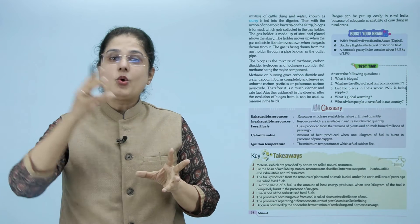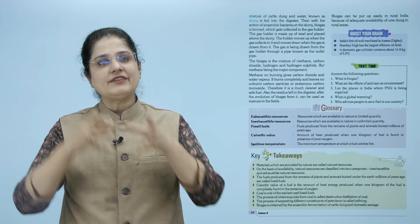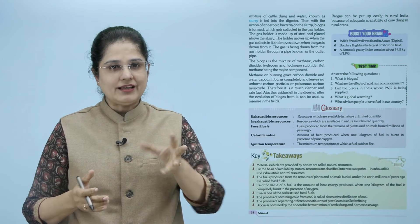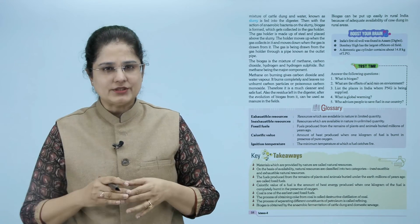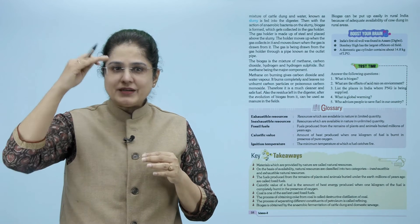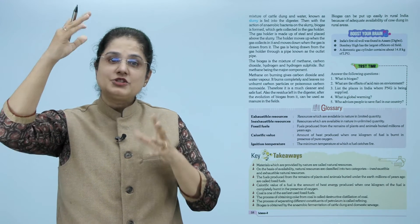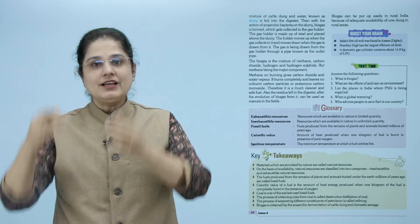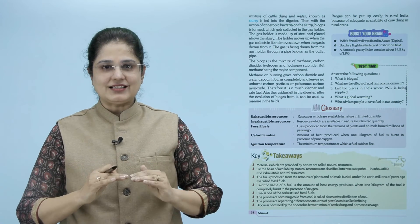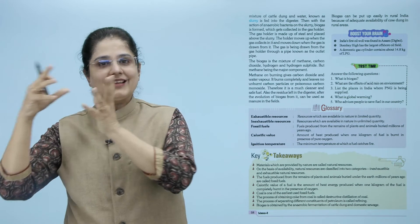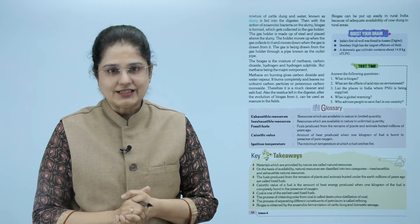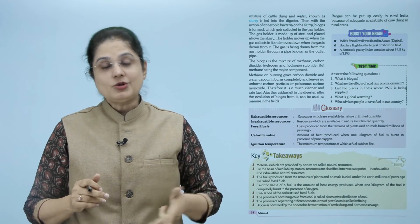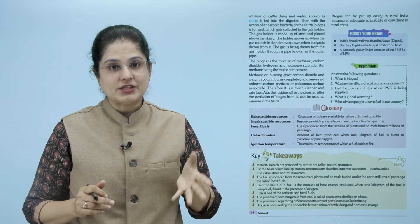Bio gas को एक gas holder में collect किया जाता है। यह gas holder steel का बना होता है और slurry के ऊपर placed होता है। जब gas collect होती है तो holder ऊपर की तरफ move करता है, और जब gas निकाल लेते हैं तो वो वापस नीचे आ जाता है। Pipe के through ये gas बाहर निकाल ली जाती है। जो bio gas है ये methane, carbon dioxide, hydrogen और hydrogen sulfide का mixture है।